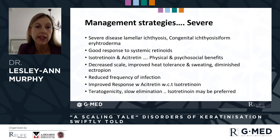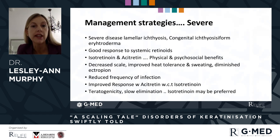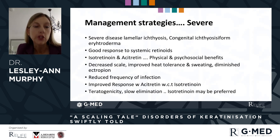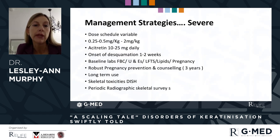Both isotretinoin and acitretin have benefits. They can both decrease scale, improve a patient's heat tolerance and sweating, and diminish or even reverse the extent of ectropion. They also reduce the risk of infection. Acitretin is probably better than isotretinoin, but bearing in mind there are choices to be made and discussions to be had around teratogenicity — particularly in the case of acitretin, where because of its slow elimination, those women who may wish to consider pregnancy in the short or medium term, it very much limits their choices. Pregnancy should be avoided for up to three years in the case of acitretin.